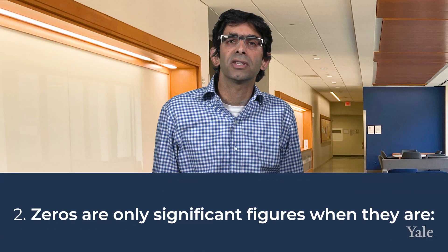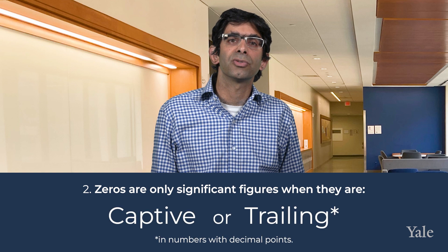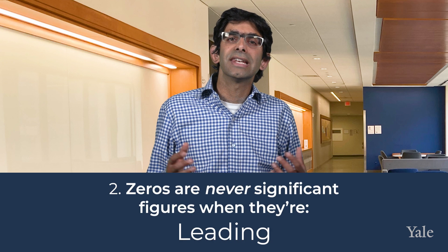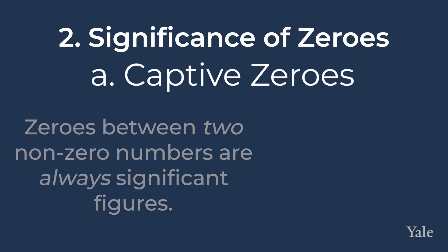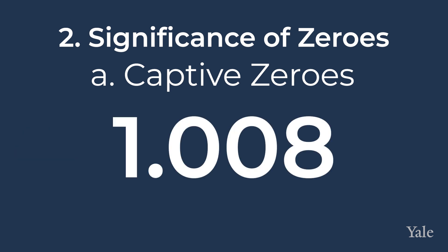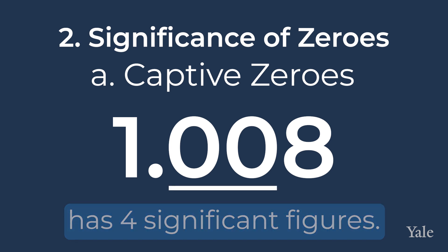Second, zeros are only significant figures when they are captive zeros or trailing zeros in numbers with decimals. Leading zeros are never significant figures. Captive zeros, which are zeros between two non-zero numbers, are always significant figures. So 1.008 has four significant figures. Captive zeros are held captive by the other significant figures and are significant figures themselves.